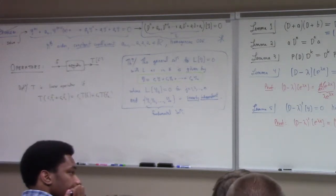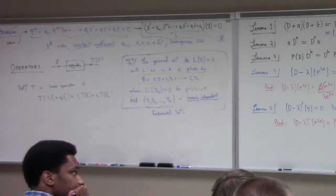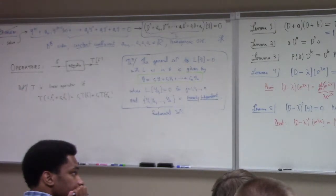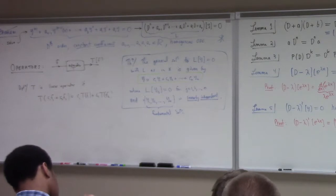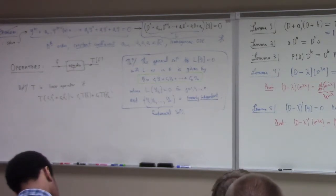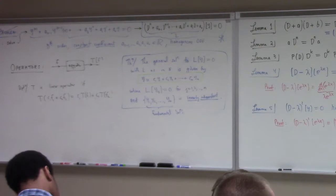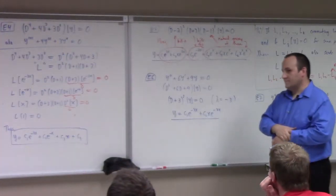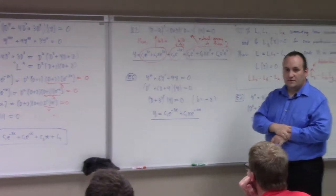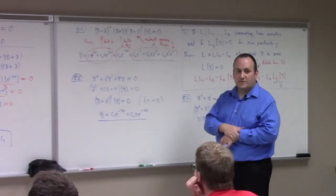We don't yet have the technology to detect linear independence formally, but it is in fact the case that the solution sets found in Lemma 5 and Lemma 6 — like x and e^x, and x·e^x — are linearly independent. They're genuinely different functions; you can't write one as a scalar multiple of another.